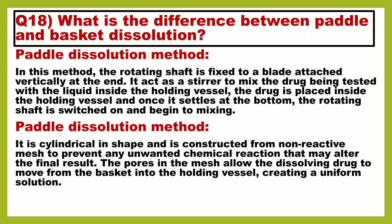Next question is: what is the difference between paddle and basket dissolution? In the paddle dissolution method, the rotating shaft is fixed to a blade attached vertically at the end, which acts as a stirrer to mix the drug with the liquid inside the holding vessel. The drug is placed inside the holding vessel and once it settles at the bottom, the rotating shaft is switched on to begin mixing. In the basket method, the apparatus is cylindrical in shape and constructed from non-reactive mesh to prevent unwanted chemical reactions. The pores in the mesh allow the dissolving drug to move from the basket into the holding vessel, creating a uniform solution.